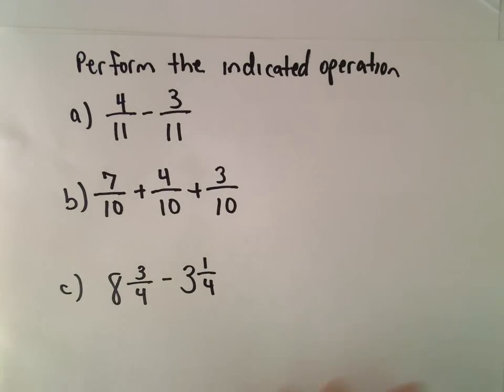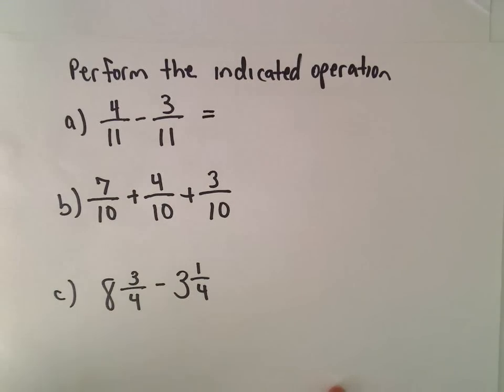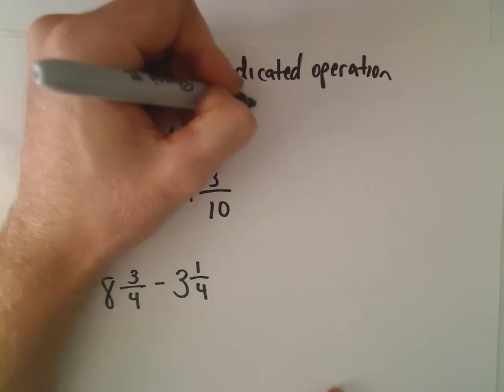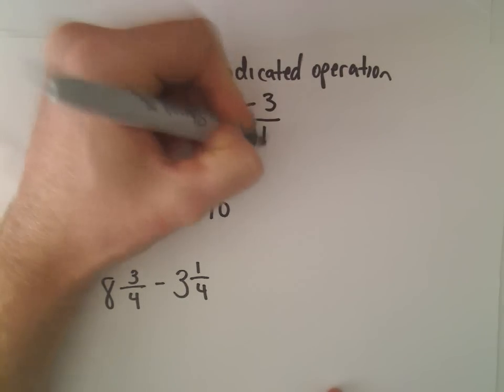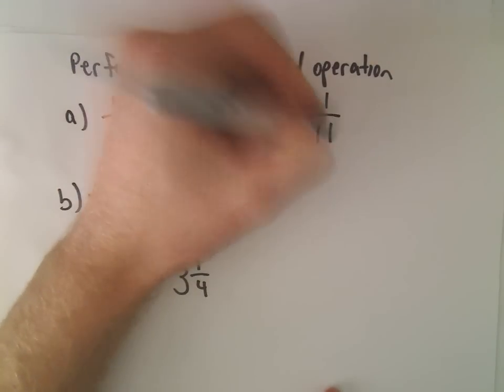But in these first examples here, everything should work out without too much trouble. So we have 4/11 - 3/11. Again, we have the same number in the denominator, so we just do the arithmetic in the numerator. So 4 minus 3 will leave us with 1/11.